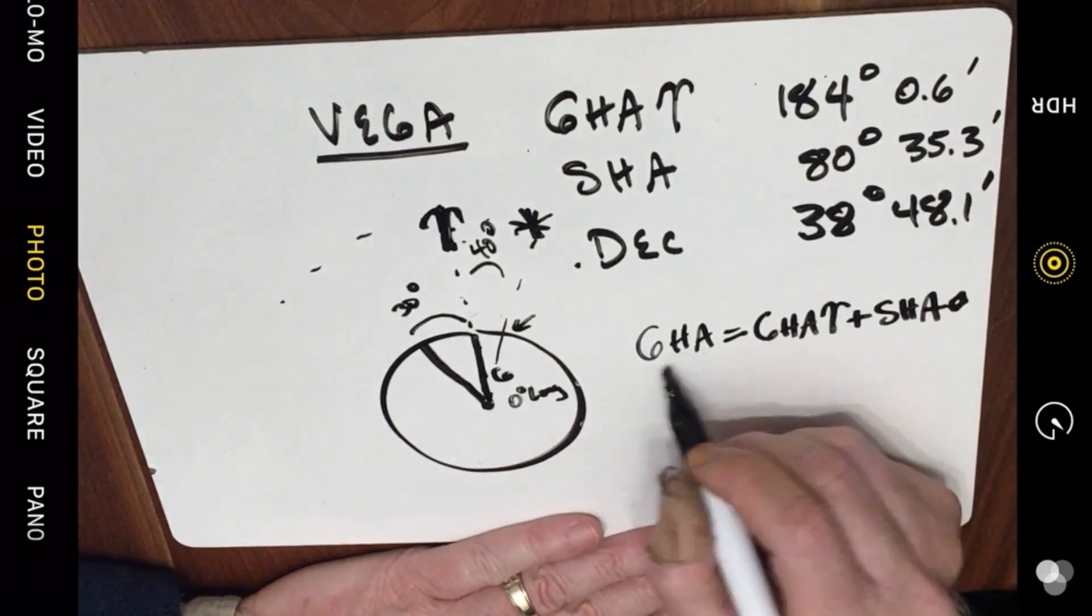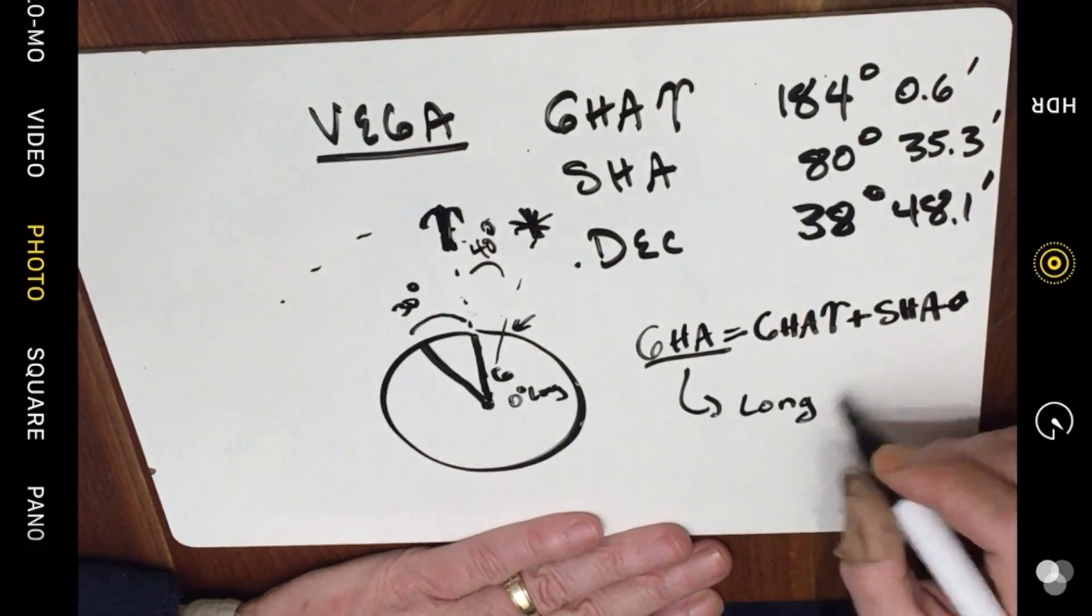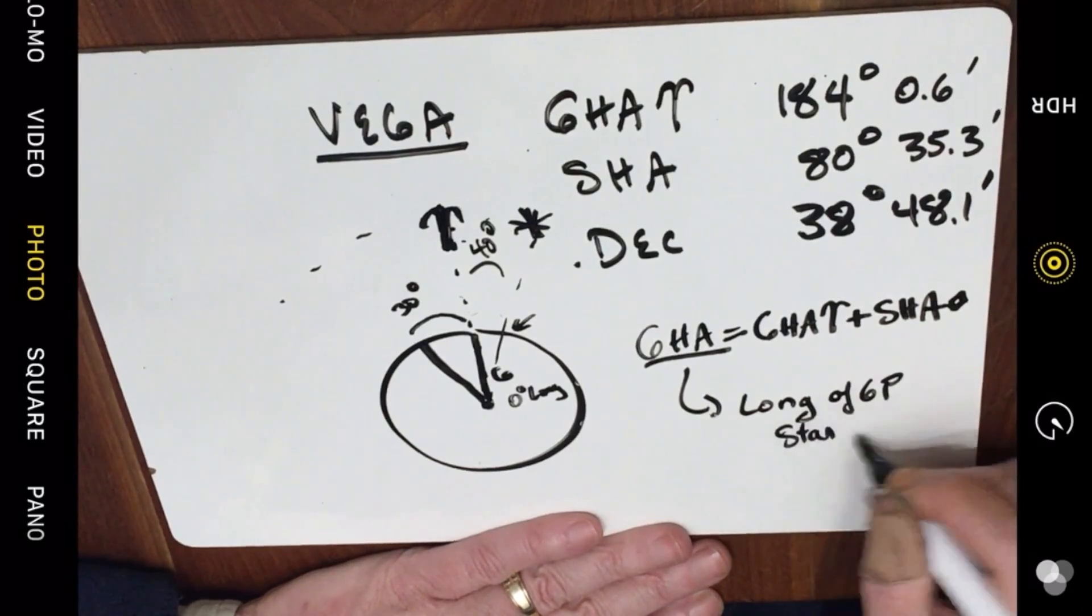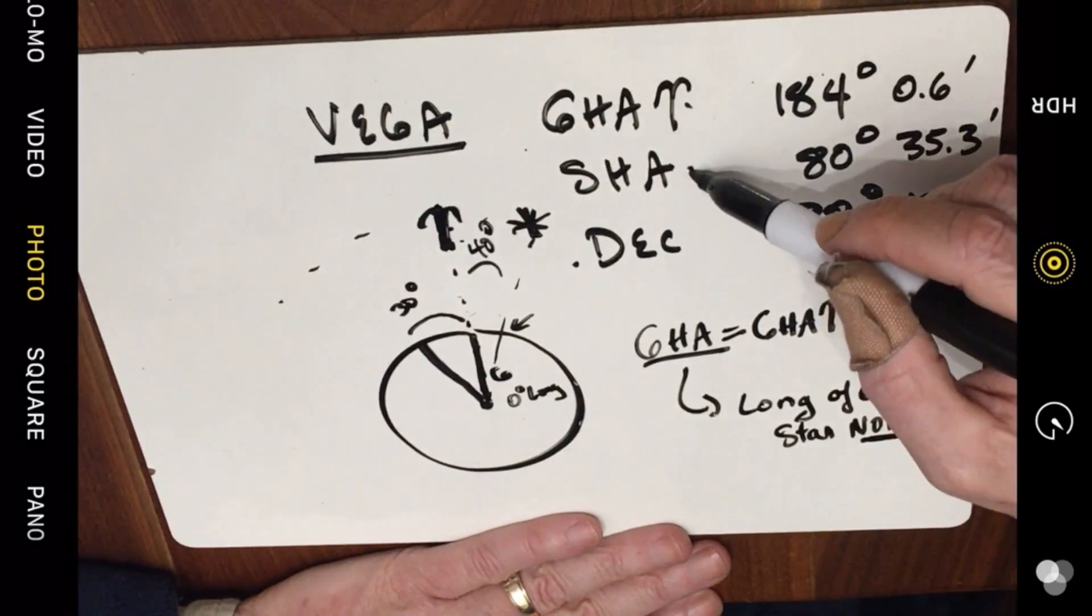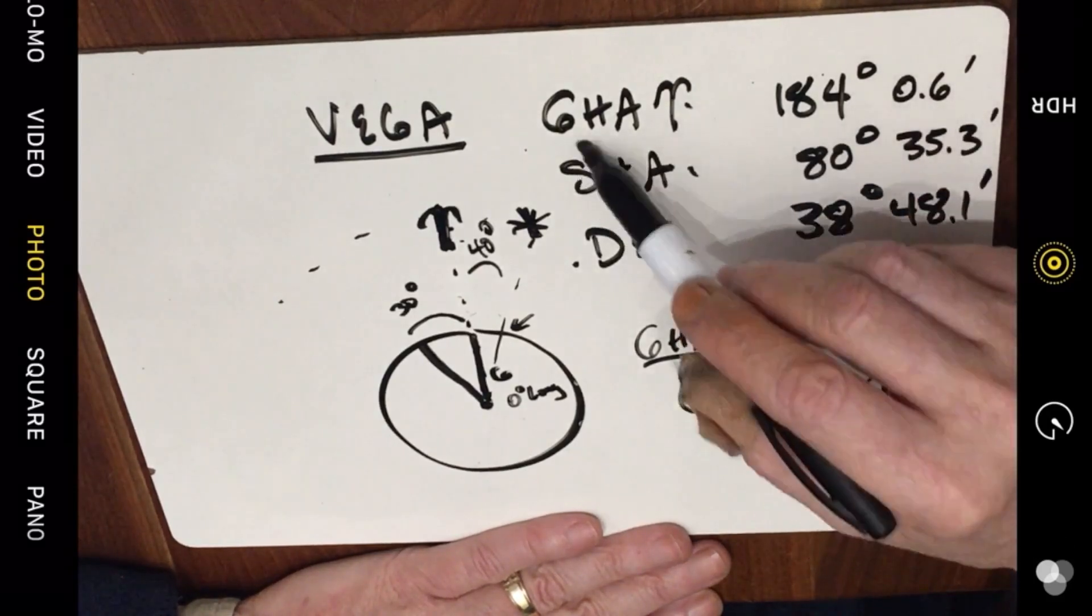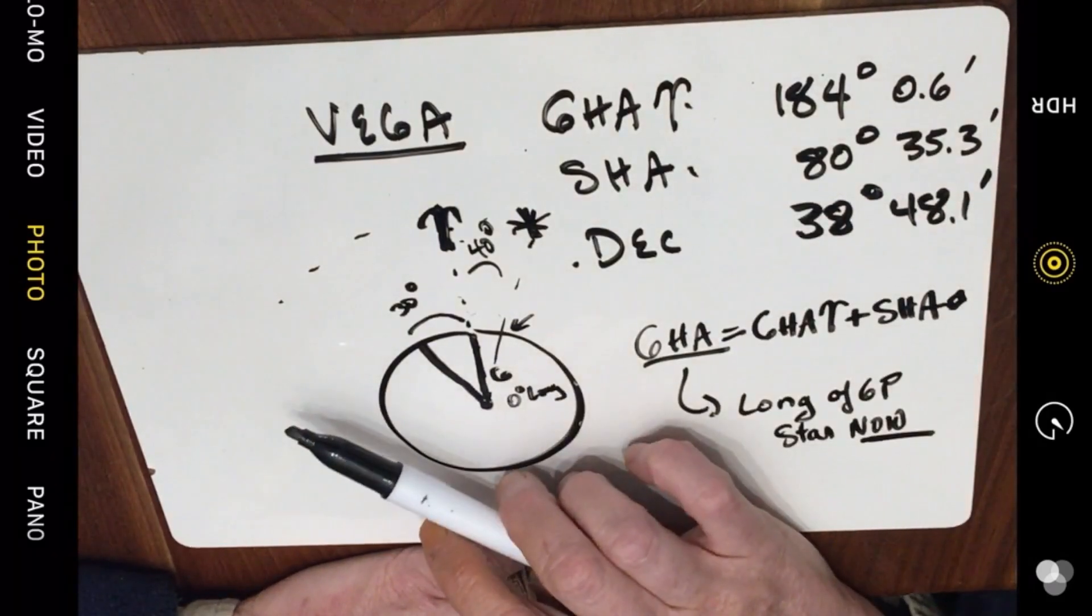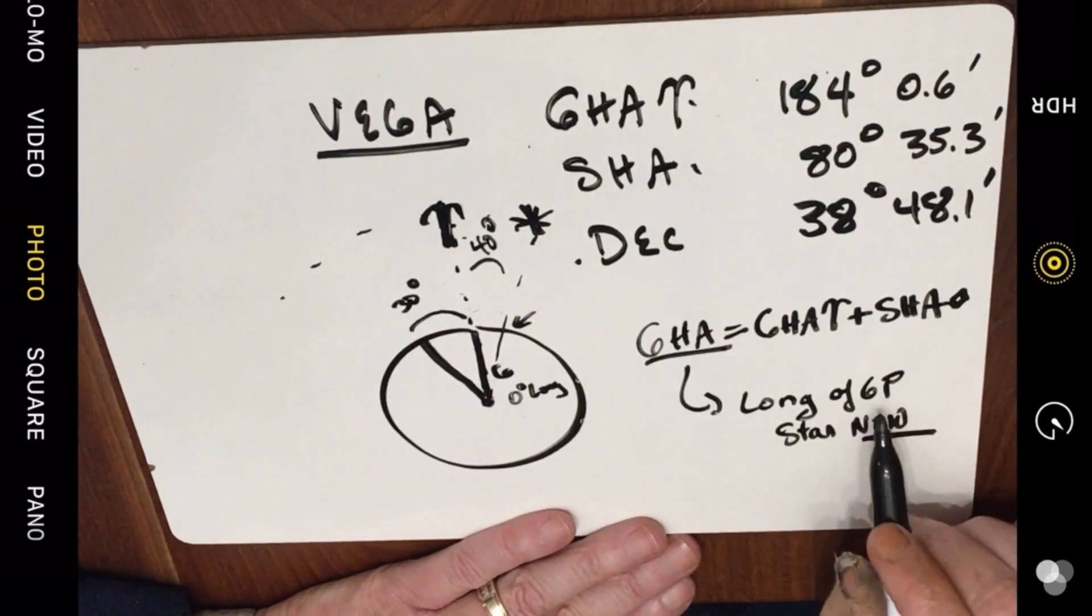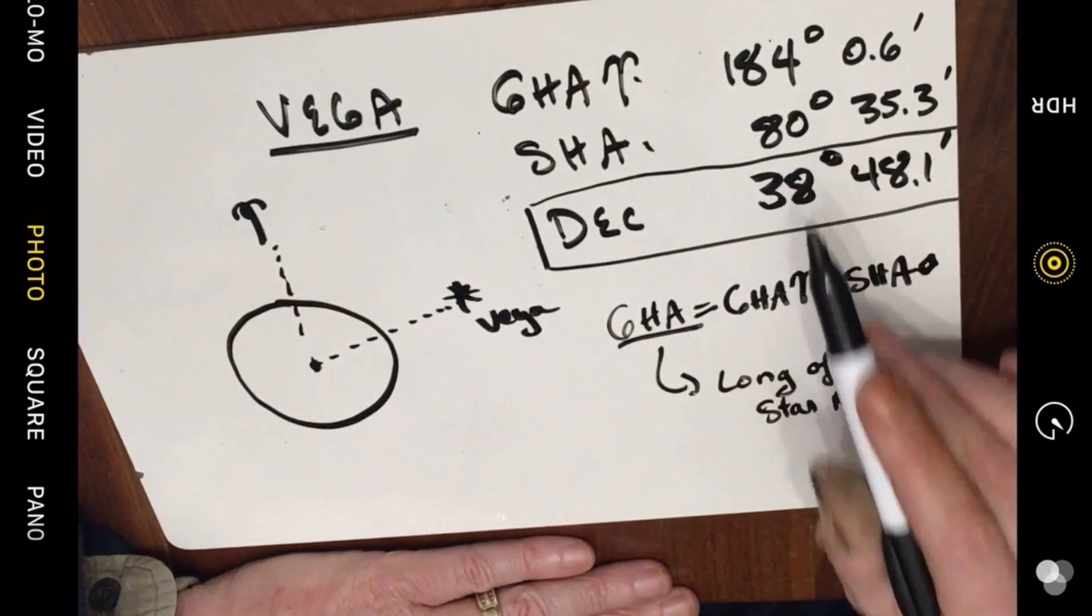Now what the Greenwich hour angle will be is that is the longitude of the geographic position of the star now. The sidereal hour angle between Aries and the star does not change. The Greenwich hour angle to Aries does change as the earth rotates. So now that we have the longitude of the geographic position of the star, we need to get the latitude of it. So let's look at the situation up here that we find ourselves in with Vega.